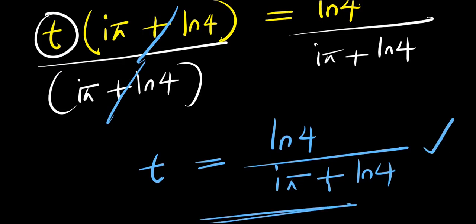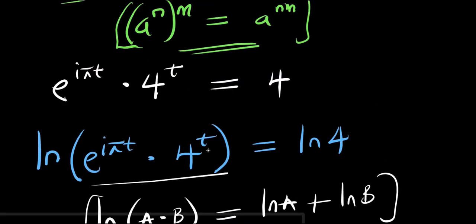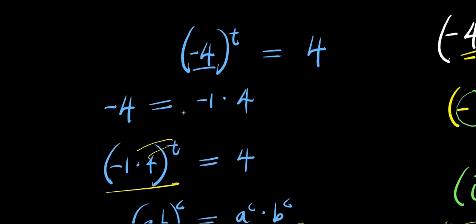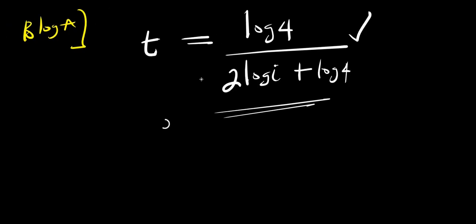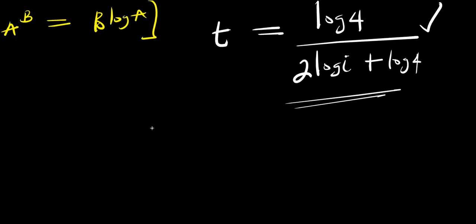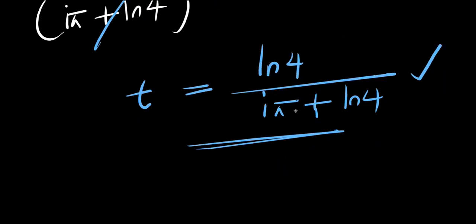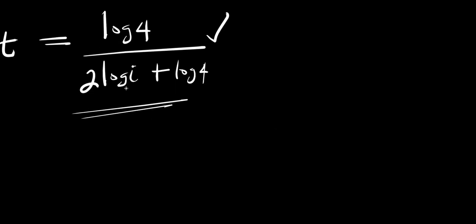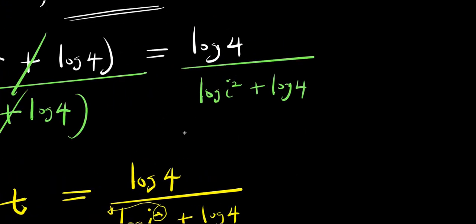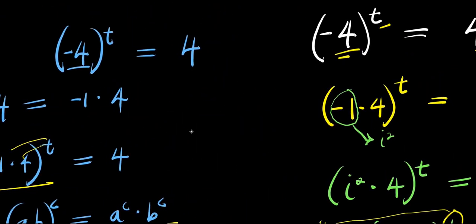So here is it — this is the solution we have gotten using this particular method. So ladies and gentlemen, we have gotten our solution, and it's actually the same thing. One is in respect to natural log while the other one is in respect to log base 10. The first solution is log 4 divided by (2·log i plus log 4), and the second solution using the other method is natural log of 4 divided by (i·pi plus natural log of 4). They are both correct irrespective of the method used. Thank you and see you again.